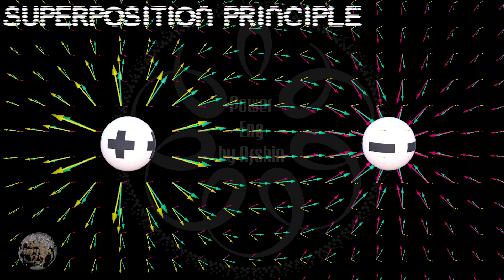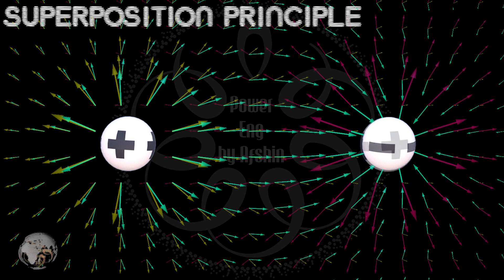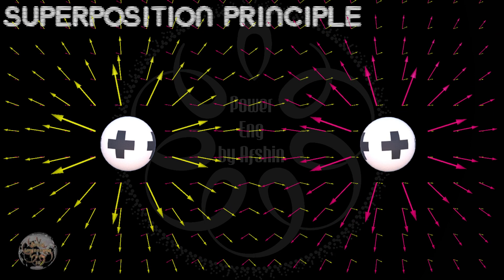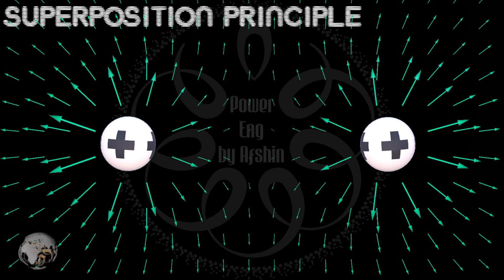As you can see on the screen, the field vectors emanate from the positive charge and point toward the negative charge. If two like charges are placed close to each other, the electric field in the space is determined by the vector sum of the fields produced by each charge.